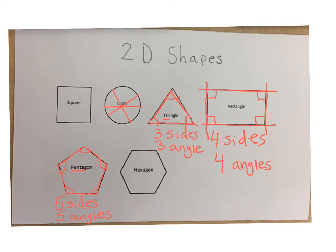And then finally we have the hexagon. Our prefix hexa means six. So we're going to have six sides and then one, two, three, four, five, six angles.